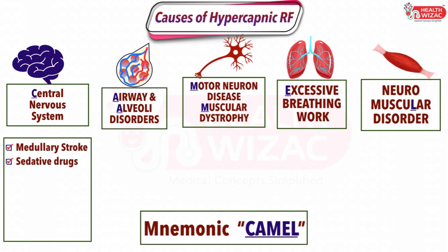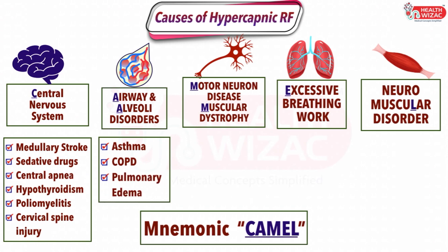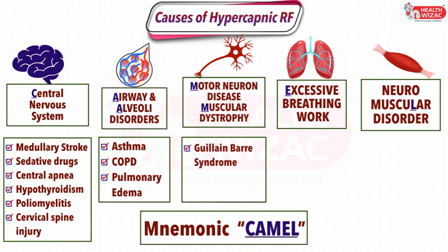CNS causes include conditions like medullary stroke, sedative drugs, central apnea, hypothyroidism, poliomyelitis, and cervical spine injury. Airway and alveolar disorders are present in conditions like asthma, COPD, and pulmonary edema. Motor neurone disorders include conditions like Guillain-Barré syndrome and critical illness polyneuropathies.